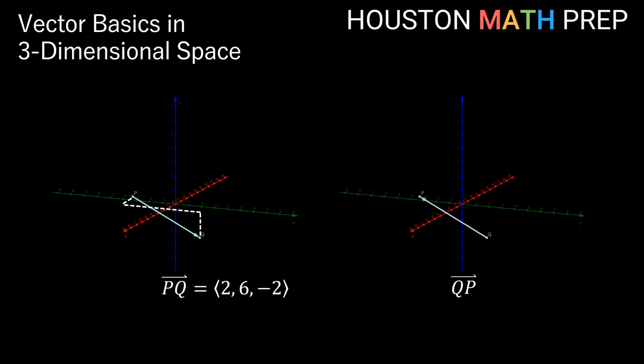The vector QP also uses these same points, but because of the order listed in the name of the vector Q then P, this vector actually starts at Q and ends at P. Traveling all of these quantities in the reverse directions means that its coordinates will actually be negative 2, negative 6, positive 2, all exactly opposite. So we can see that changing the direction of a vector gives us a different vector. We see that 2, 6, negative 2, and negative 2, negative 6, 2 are not the same thing here.